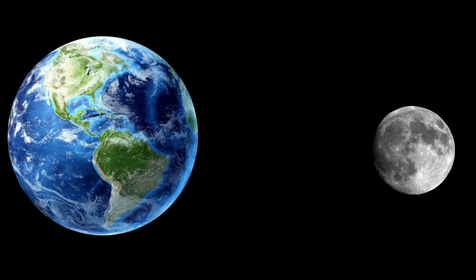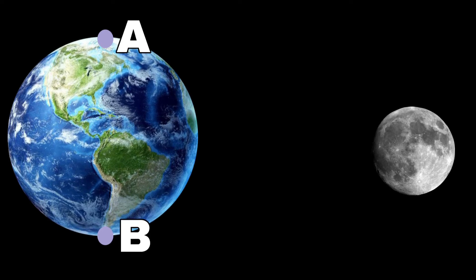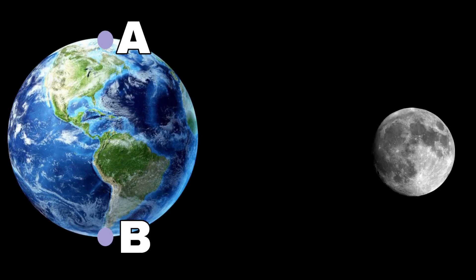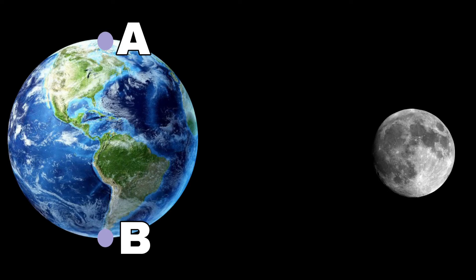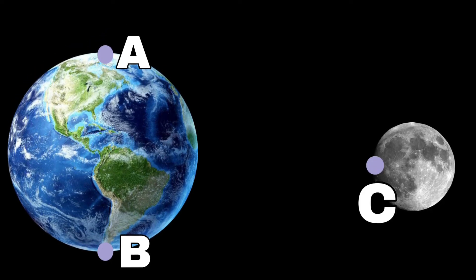Now, let those two points on Earth be point A and point B. In order to measure distance correctly, these two points must be diametrically opposite. Then points A and B would be the Earth's diameter.